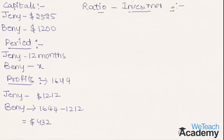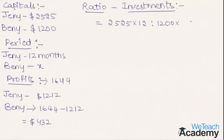The ratio on investment is calculated by multiplying the capitals and periods. Jenny's capital is $2,525 into her investment period of 12 months, and Benny's capital is $1,200 into her investment period X. By multiplying 2,525 and 12 we get 30,300, and Benny's side is 1,200X.